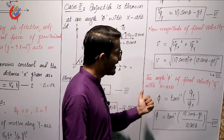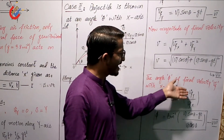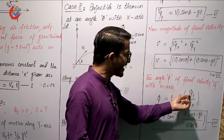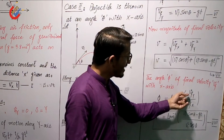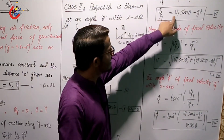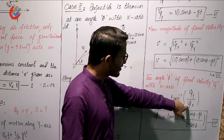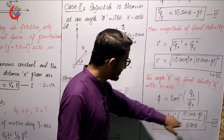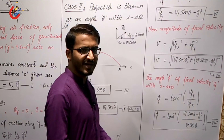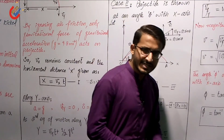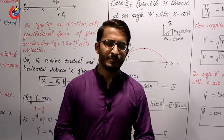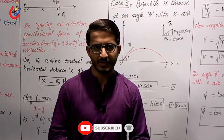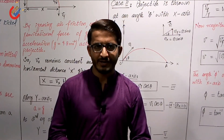To find the angle φ of the final velocity vector, we use the tangent ratio: tanφ = (y-component of final velocity) / (x-component of final velocity), so φ = tan⁻¹(Vfy / Vfx). Substituting the values of Vfy and Vfx already derived gives the angle of final velocity along the x-axis. With this, today's topic is complete. Please subscribe to the channel and click the bell icon for notifications of upcoming videos. Thank you very much, Allah Hafiz.